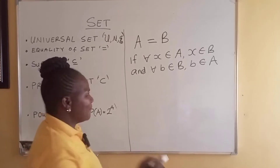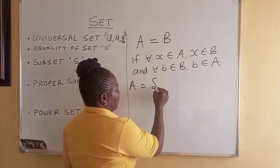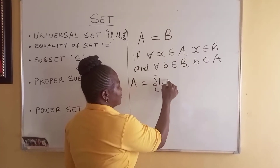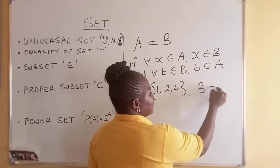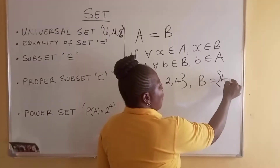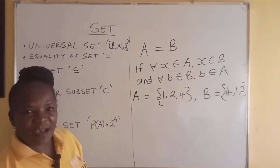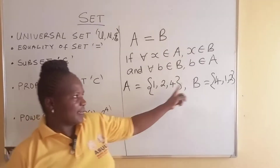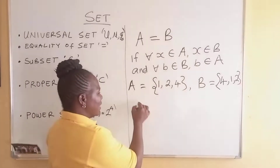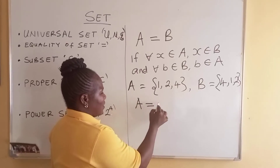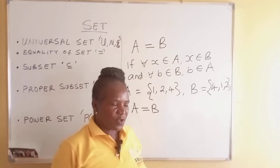Example: let A = {1, 2, 4} and B = {4, 1, 2}. Observe that all elements in A are in B, and all elements in B are in A. So we can confidently, authoritatively say that A is equal to B, or B is equal to A.